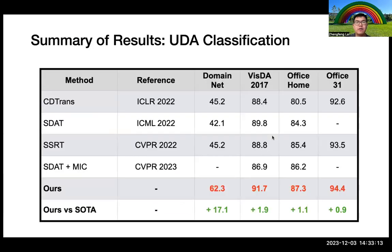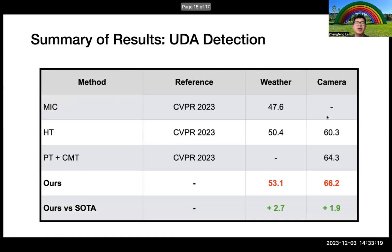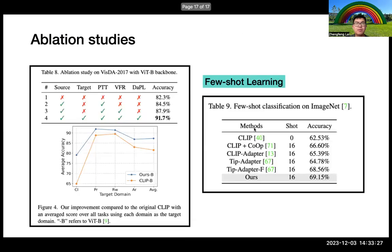We achieve very good results on the UDA classification task, and we also outperform other algorithms on the UDA detection task. We perform ablation studies to show the importance of different components, and we also do few-shot classification on ImageNet to show whether our proposed feature refinement is helpful for adapting CLIP on downstream tasks. Thank you for listening — this is our work.